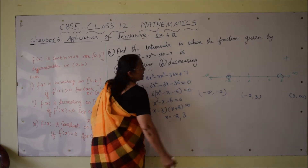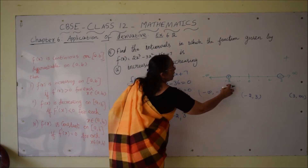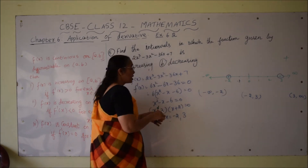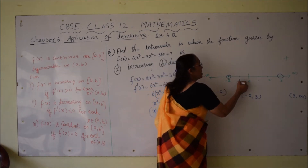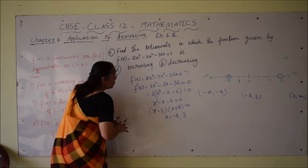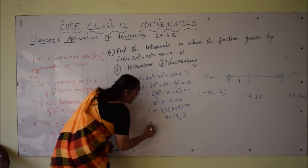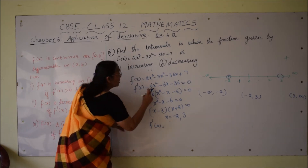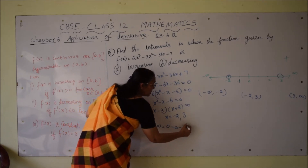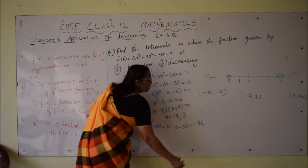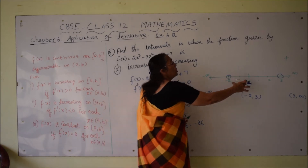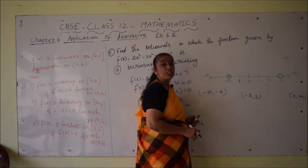We will start with the interval (-2, 3) because 0 lies in this interval, making the calculation easy and simplification straightforward. Substituting x = 0 into f'(x): 6(0)² - 6(0) - 36 = -36, which is negative. So f'(0) is negative, meaning the function is decreasing in this interval.